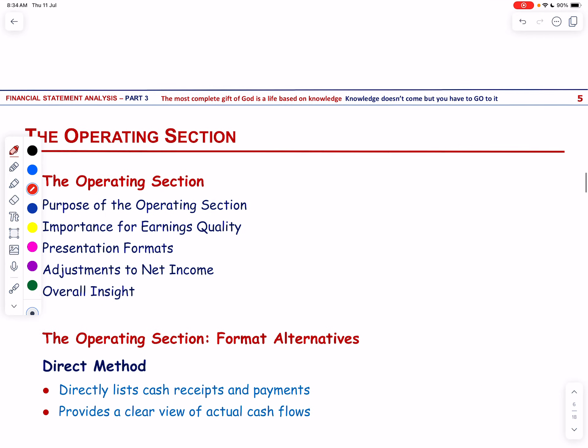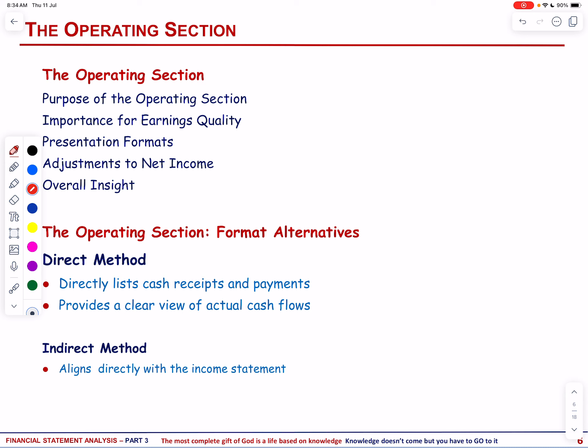Let us now discuss the operating section of the statement of cash flows, highlighting the types of adjustments necessary to reconcile net income to cash flows from operations. The operating section reveals cash inflows and outflows from a company's main business operations. It links cash flows to reported profitability, helping to detect potential earnings manipulation. Both US GAAP and IFRS offer two formats to present the operating section and both reconcile net income to cash flows from operations.